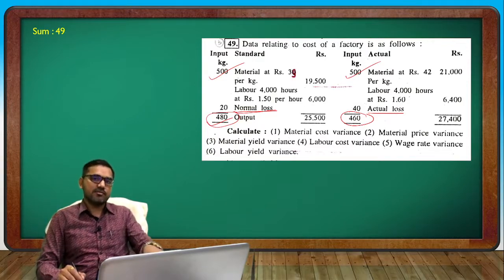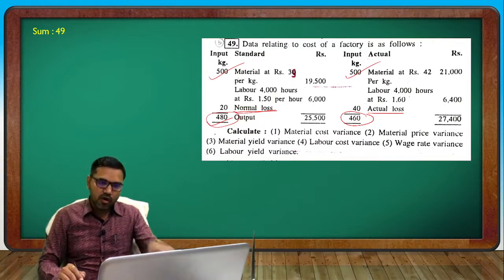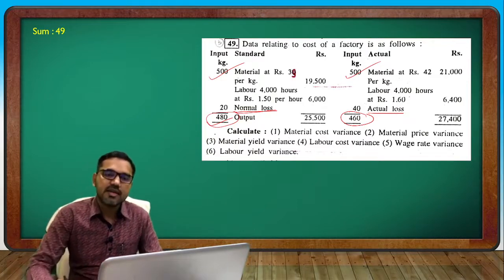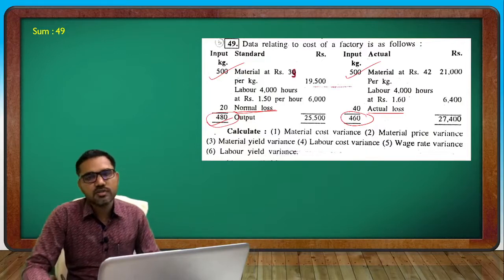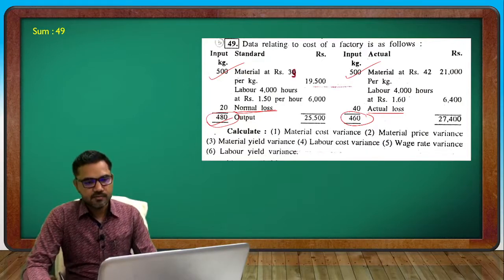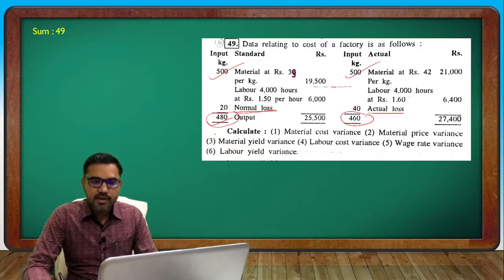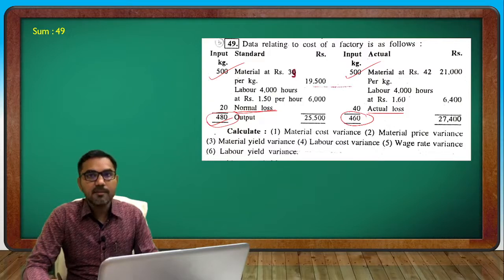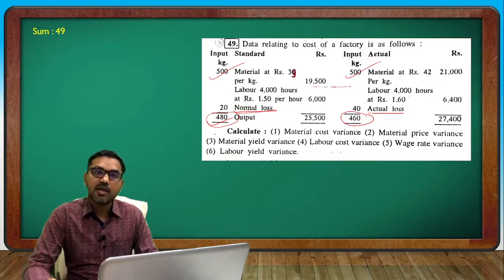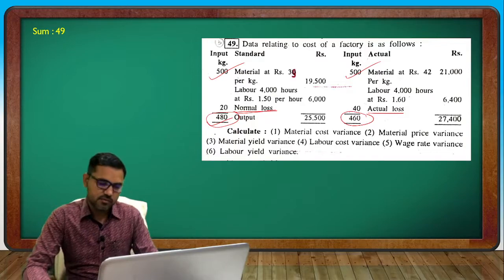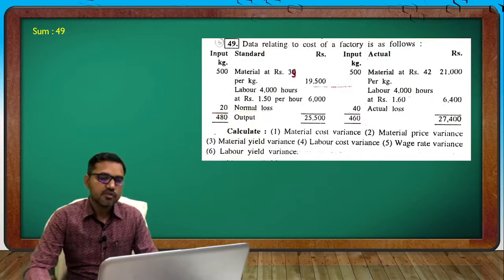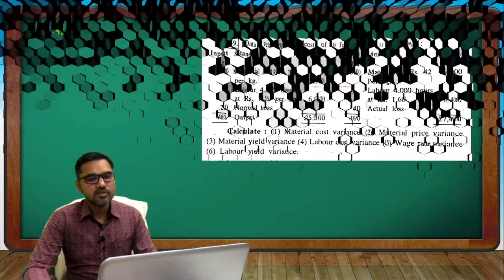Normal loss 20 and actual loss 40. Calculate material cost, material price, material yield, labor cost, labor rate, and labor yield variance. This is a situation calculation question.